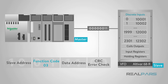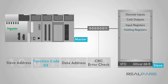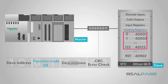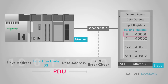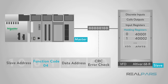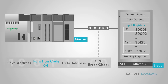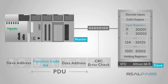Function code 03, ReadHoldingRegistersCode, is used to read the contents of a contiguous block of holding registers in a remote slave. The request PDU specifies the starting register address and the number of registers to read from the slave device. Function code 04, ReadInputRegistersCode, is used to read from 1 to 125 contiguous input registers in a remote device. The request PDU specifies the starting register address and the number of registers.